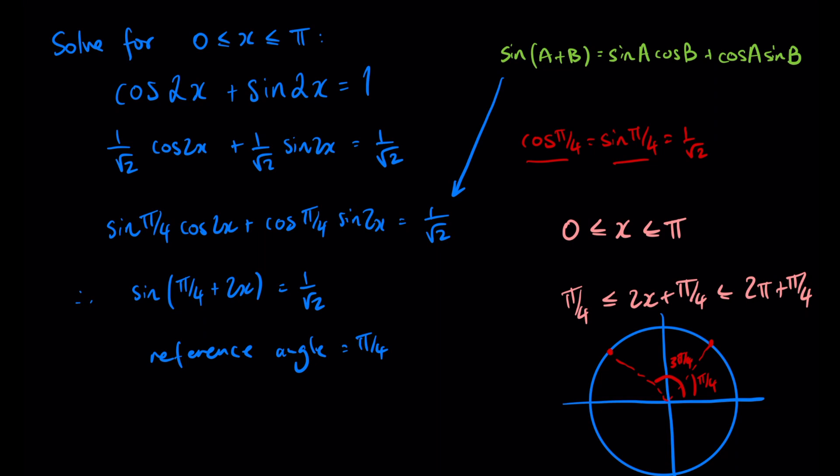We can go ahead and find all of our solutions, so we have 2x plus π on 4 equal to π on 4, 3π on 4, and 2π plus π on 4 which is 9π on 4.